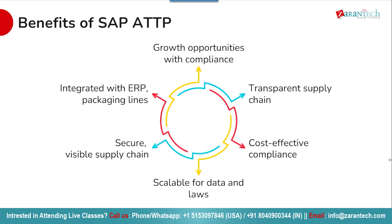Moving ahead, let us look at the benefits of SAP ATTP. By implementing SAP ATTP, pharmaceutical companies can realize several key benefits. It provides a secure and transparent supply chain by enabling end-to-end visibility. It is a cost-effective way to maintain regulatory compliance compared to custom solutions or manual processes. The visibility and tracking it enables also opens up growth opportunities. SAP ATTP is fully integrated with SAP ERP and packaging line equipment for efficiency, and it is highly scalable to handle large data volumes and adapt to new regulations over time.